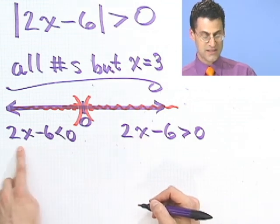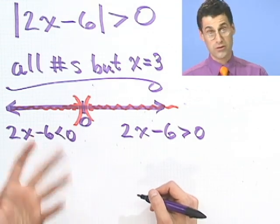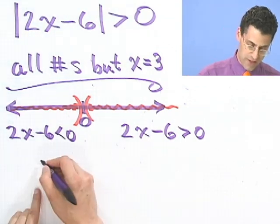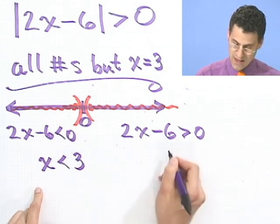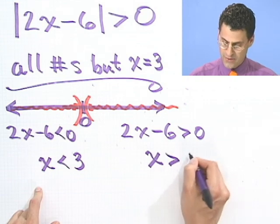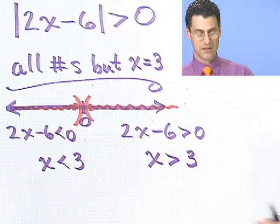And if you solve this inequality, which I'll let you try on your own, or you already tried it, I hope, you'll see that x is less than 3. And the solution to this inequality is x is greater than 3. And so then what's the answer?